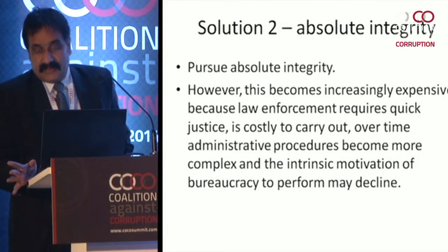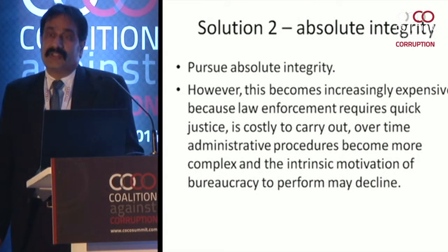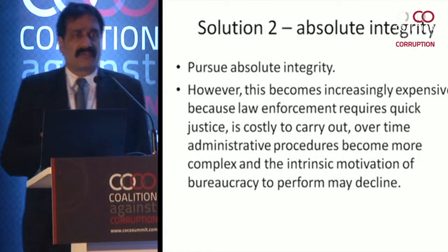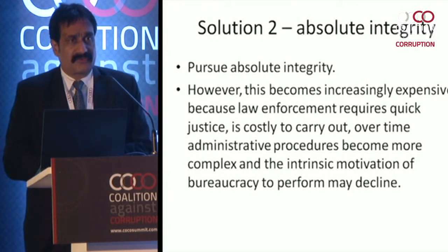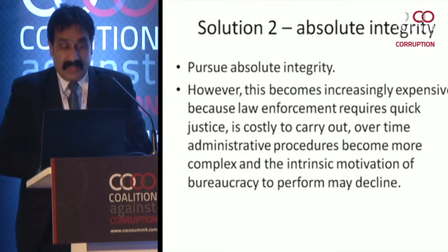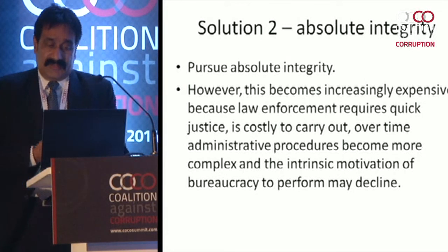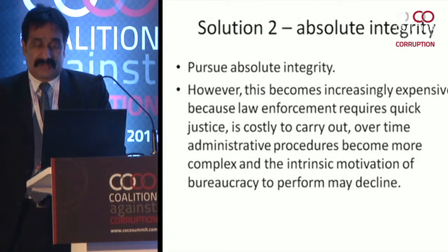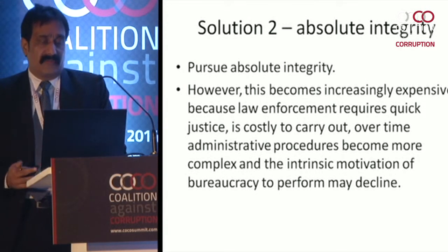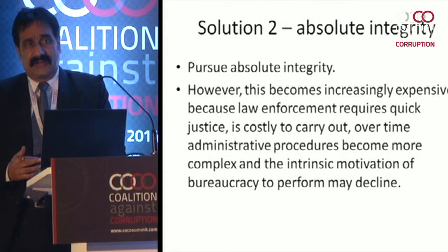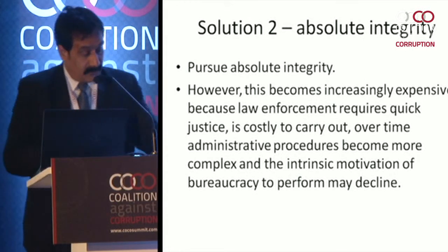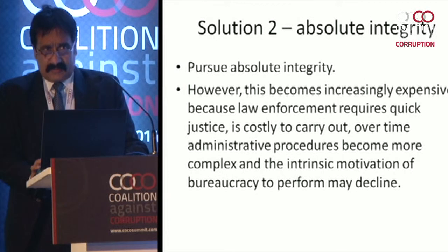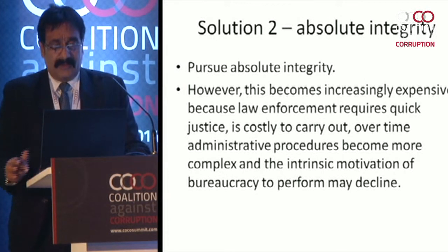There are four ways we have been dealing with corruption. The first is the standard way: you increase the risk of getting caught, impose more draconian penalties, and use standard tools — neutral investigative agencies, combined investigation and prosecution, prosecuting magistrates like the French system, and special courts for faster justice. However, there is a law of decreasing marginal returns; delinquents are less deterred by such draconian measures over time, and costs increase.